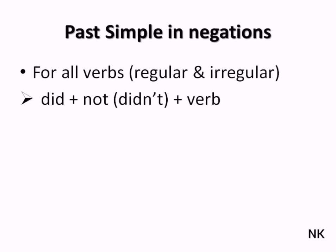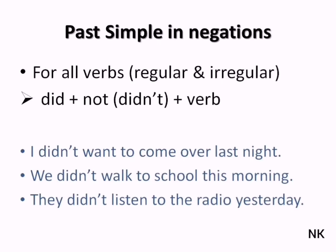For the past simple in negations, regular and irregular, we also use the past simple tense of the auxiliary verb 'to do', which is 'did', and we add 'not' to it. I didn't want to come over last night. We didn't walk to school this morning. They didn't listen to the radio yesterday.